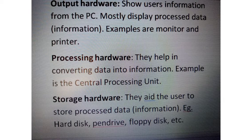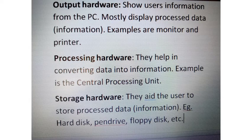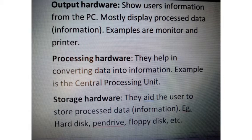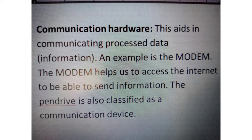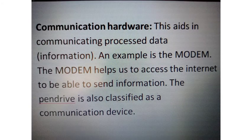Output hardware displays information to the user after data is processed into information. Then there's processing hardware and storage hardware. It's worth noting that some storage hardware examples also qualify as communication hardware — devices like pen drives and servers that store data but also serve as communication devices for sending information from one point to another. That is why those examples appear under both storage and communication hardware.